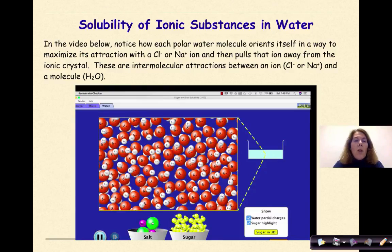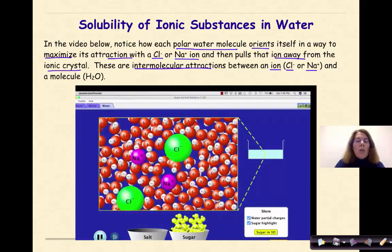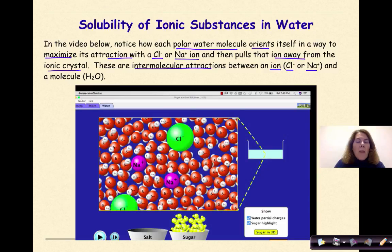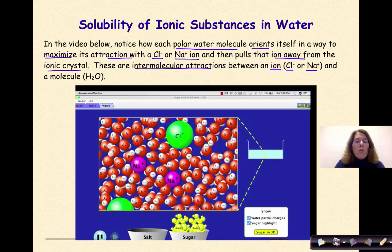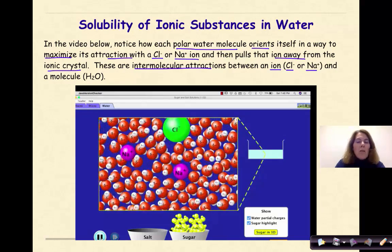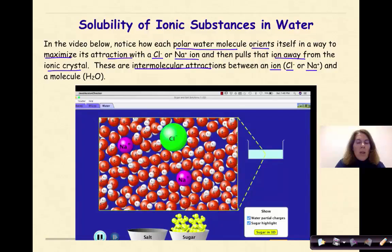Notice how each polar water molecule orients itself in a way to maximize its attraction with a chloride ion or a sodium ion and then pulls that ion away from the ionic crystal. These are intermolecular attractions between an ion—chloride ion or sodium ion—and a molecule of water. If we play the simulation really quickly, we put the sodium chloride in, and we can see here that in general, the chloride ions are surrounded by water molecules with the hydrogen ions facing in, and the sodium ions are oriented in a way where the red oxygen is oriented towards the positive sodium ion.